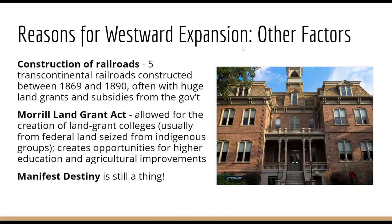A few other factors helped to explain westward expansion. Five transcontinental railroads were constructed between 1869 and 1890, usually with huge land grants and subsidies from the government. A lot of the best public lands were actually given over to railroad companies, often more land than they needed.